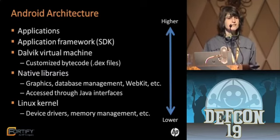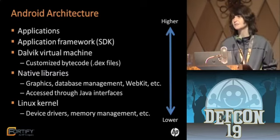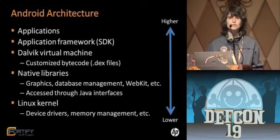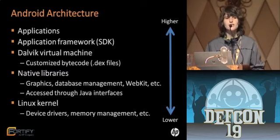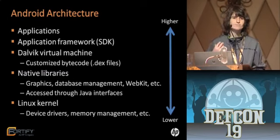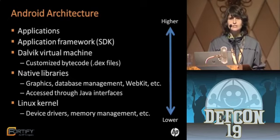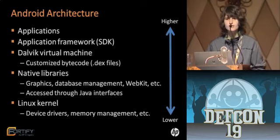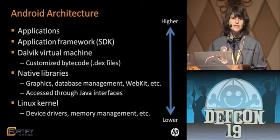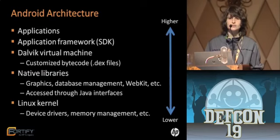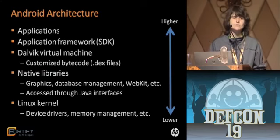These native libraries can be accessed via Java interfaces. On top of the native libraries there's a modified virtual machine called the Dalvik virtual machine, which runs .dex rather than .class files. Android applications are written in Java using the Google Android SDK, which is basically a Java interface that allows you to access systems and services of the Android platform.